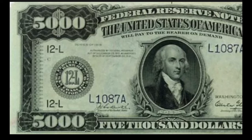Fun fact twenty-one: prior to 1969, five hundred, five thousand, and ten thousand dollar notes were issued. The five thousand dollar note shown in the picture is no longer produced; although still legal tender, these notes are in the hands of private collectors. Fun fact twenty-two: the Bureau of Engraving and Printing estimates that between 50 to 75 percent of US currency is actually held outside of the United States. Fun fact twenty-three: as of September 2018, 1.69 trillion in US currency was in circulation.